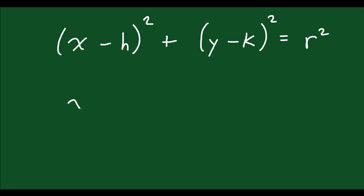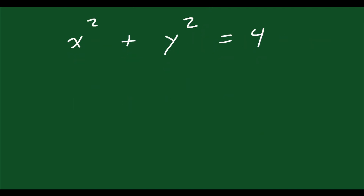If I have x squared — in other words (x minus 0) squared, so our h value is zero — plus y squared, so the k value is also zero, and that equals 4. What does this represent? To graph this, we first determine the radius. The right-hand side equals r squared, so r squared equals 4. Taking the square root of both sides gives r equals 2, because 2 squared is 4. So we're dealing with a radius of 2.